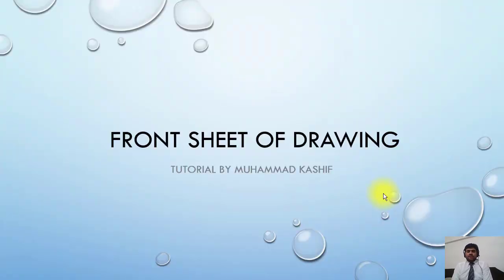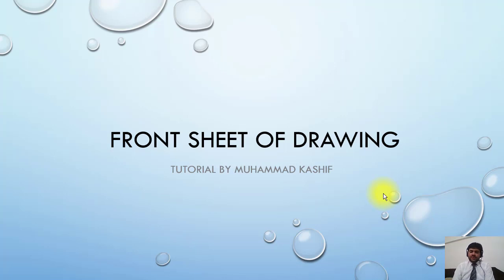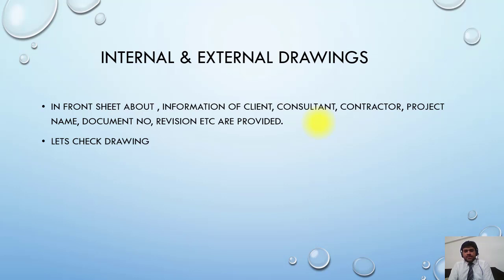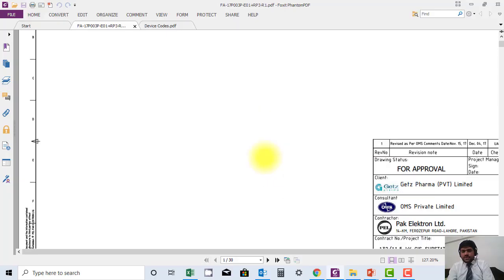Welcome. Now I will start to explain about the front sheet of the drawing. We already have a basic understanding about the drawing, so let's start with the front page — what information is available and what we should look for on the front page. Information regarding the client, consultant, contractor, project name, document number, revision number, etc. is available on the main drawing page.